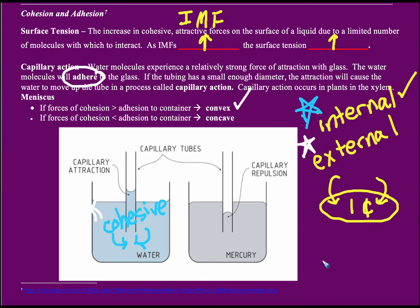Mercury tends to do a convex. It wants to stay to itself; it's not attracted to the container very much.